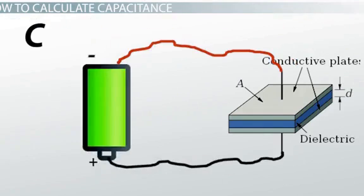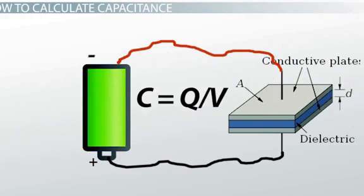The capacitance, C, of a capacitor can be determined by measuring the amount of charge stored on each plate, Q, when it is connected to a battery with a certain voltage, V. C is equal to Q divided by V.